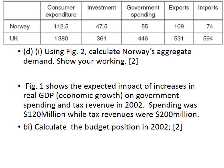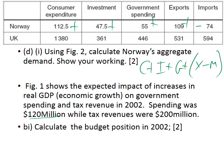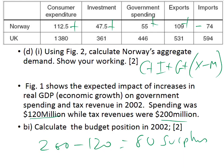Another question that may come up — and this is why you might need a calculator — are calculation questions around the case study. This example uses aggregate demand: C + I + G + X − M. You're literally just adding everything together and taking away 74 to get Norway's aggregate demand. Another calculation might be something like: figure one shows the expected impact of real GDP on government spending. Government spending was 120 million while tax revenues were 200 million — so 200 million minus 120 equals 80 million, which would be a budget surplus. Just additions, subtractions, or divisions are likely to be the calculation questions in the case study.